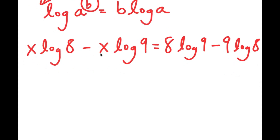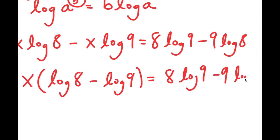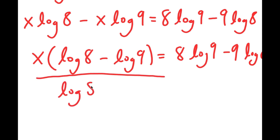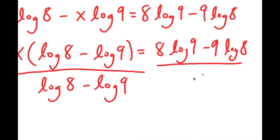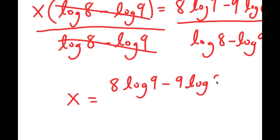Now, because both of these terms have x in them, I can simply factor out x. So I get x times log 8 minus log 9 is equal to 8 times log 9 minus 9 times log 8. We obviously want to find the value of x, and the only way to do that is to divide both sides by log 8 minus log 9. So these two cancel out, and I get x is equal to 8 times log 9 minus 9 times log 8 over log 8 minus log 9.